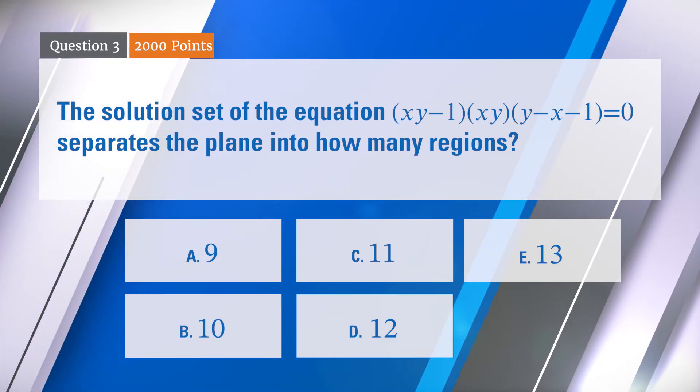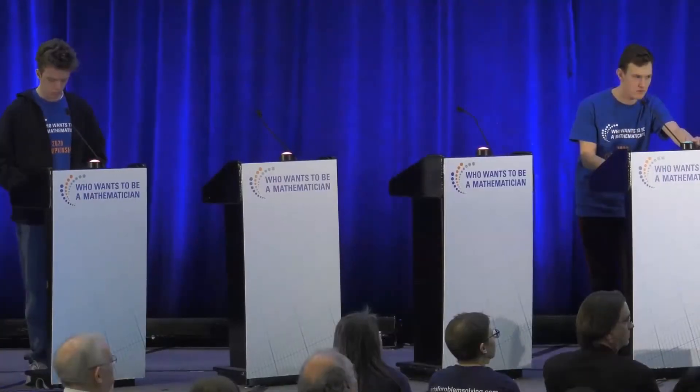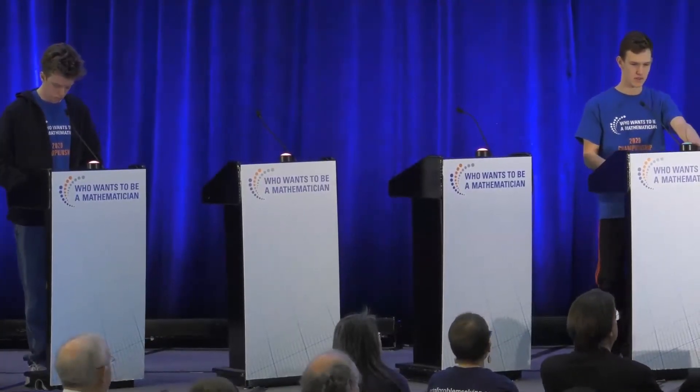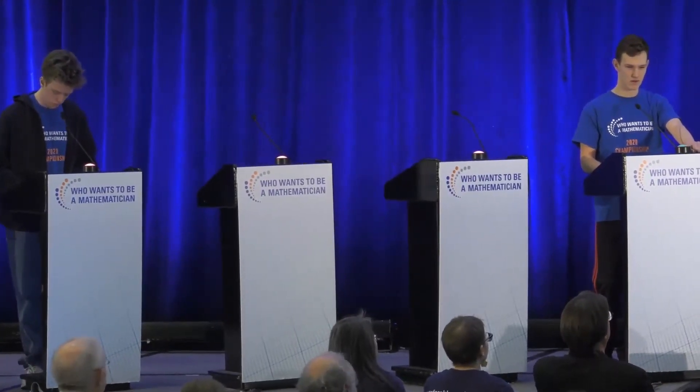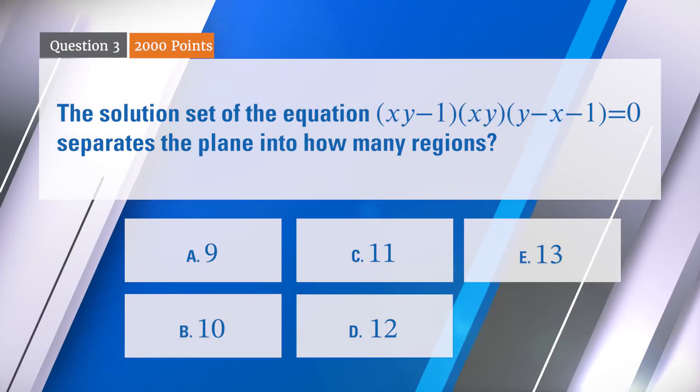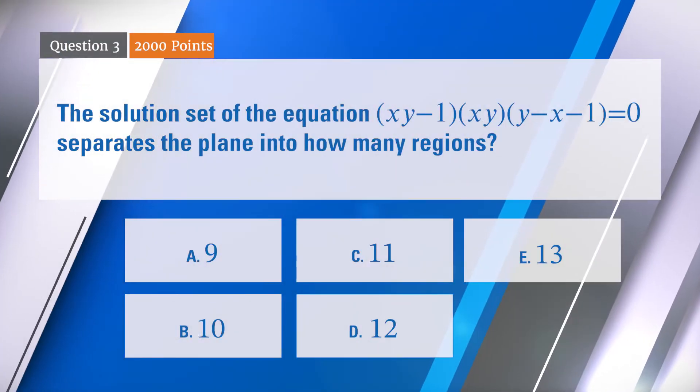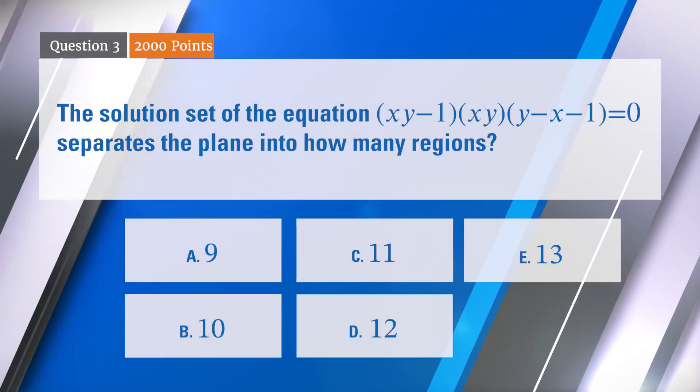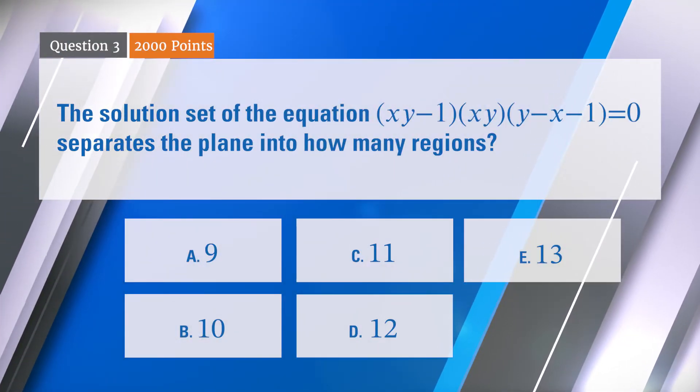Austin? A. A9? Incorrect. So that separates the plane into how many regions? Is it 9, 10, 11, 12, or 13?